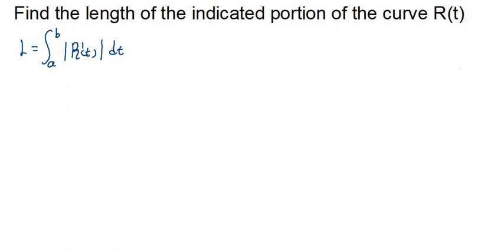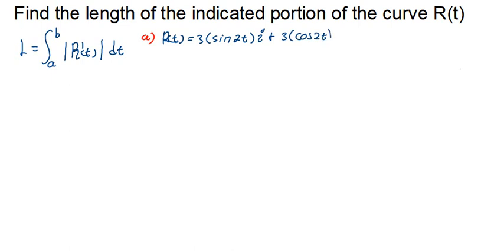We are going to go through a few examples to make sure we understand how to determine the length of a given portion of a curve. The first example is: our vector-valued function R(t) equals 3sin(2t)i plus 3cos(2t)j plus t²k, evaluated from 0 to 5. First, we need to find the first derivative.